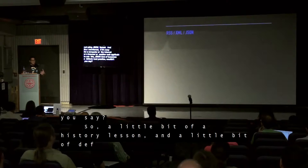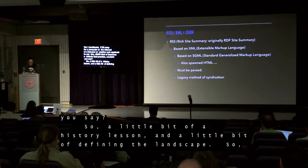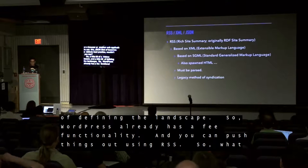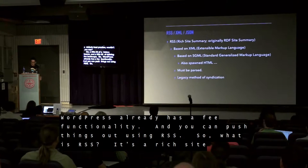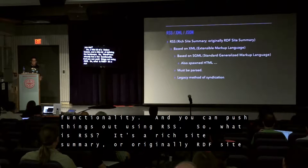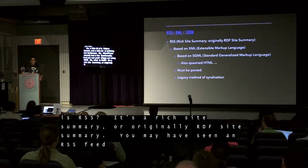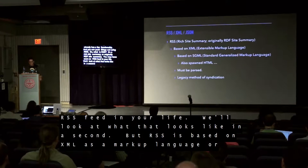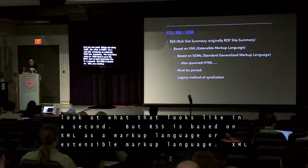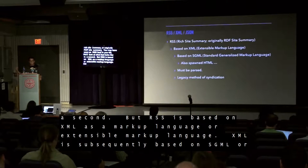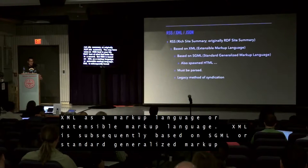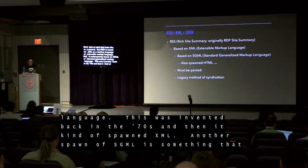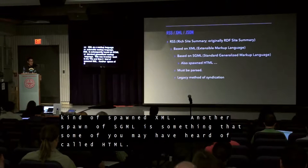So a little bit of a history lesson, a little bit of defining the landscape. WordPress already has feed functionality, and you can push things out using RSS. RSS is a rich site summary, or originally RDF site summary. You may have seen an RSS feed before. RSS is based on XML — extensible markup language — which is subsequently based on SGML, Standard Generalized Markup Language, invented back in the 70s. Another spawn of SGML is something some of you may have heard of called HTML.